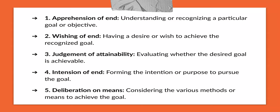The third one is judgment of attainability — evaluating whether the desired goal is achievable. We ask ourselves: is getting an iPhone 15 achievable? Yes, it's achievable — it depends on the person. You think about it, weigh the costs and effects, and at the end you come to a decision on whether you're getting it or not. The fourth one is intention of end — forming the intention or purpose to pursue the goal. After going through the judgment of attainability and realizing it is possible, the intention of end is where we form our intentions to pursue it.